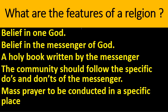The features of a Western religion include: belief in one God, belief in the messenger of God, a holy book written by the messenger, the community should follow the specific dos and don'ts of the messenger, and mass prayer to be conducted in a specific place. These are the features of a Western religion.